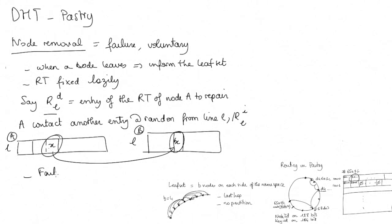In case of failure, this happens exactly the same way. When a node disappears, the neighbors notice this and fix the leaf set. Fixing the leaf set is easy because they can use the leaf set of a member of their own leaf set to fix the hole. Similarly, the maintenance of the routing table is fixed lazily exactly the same way as with a voluntary departure.